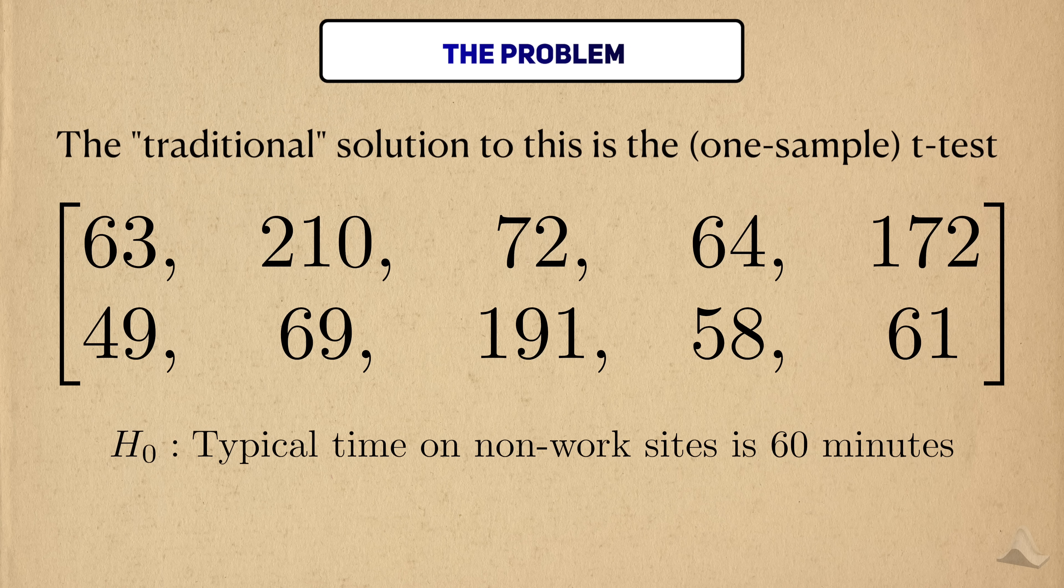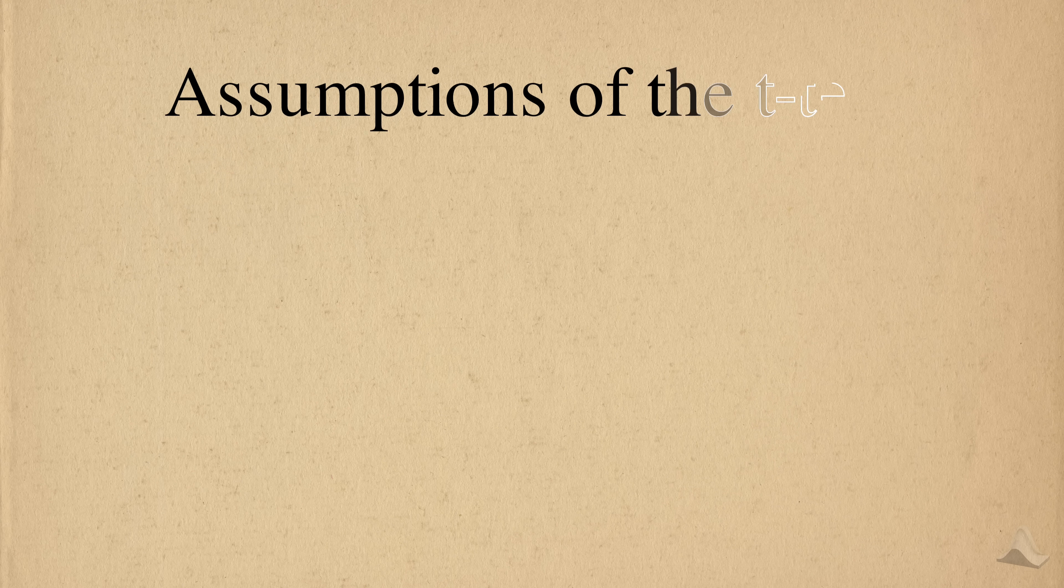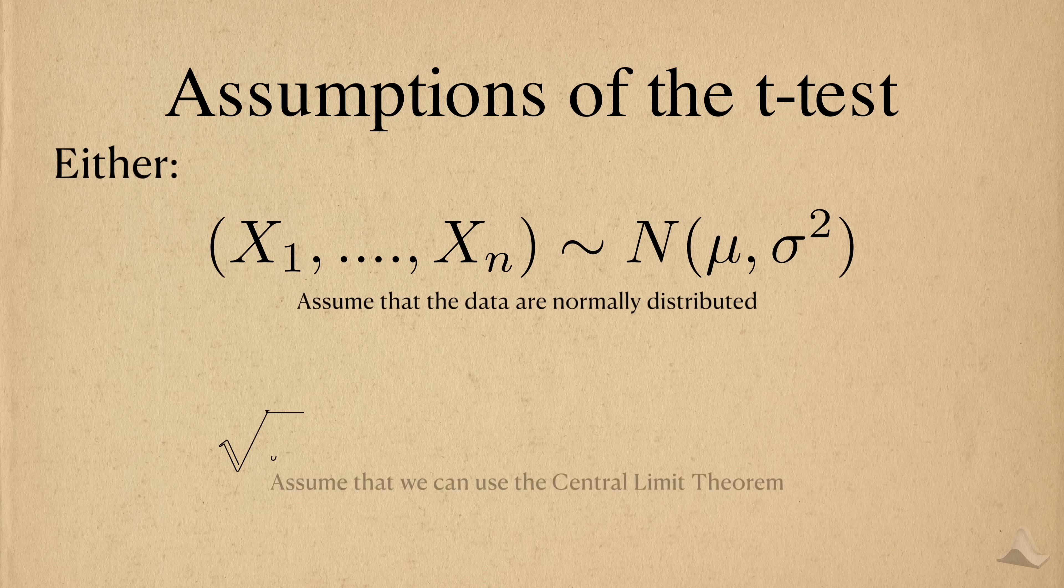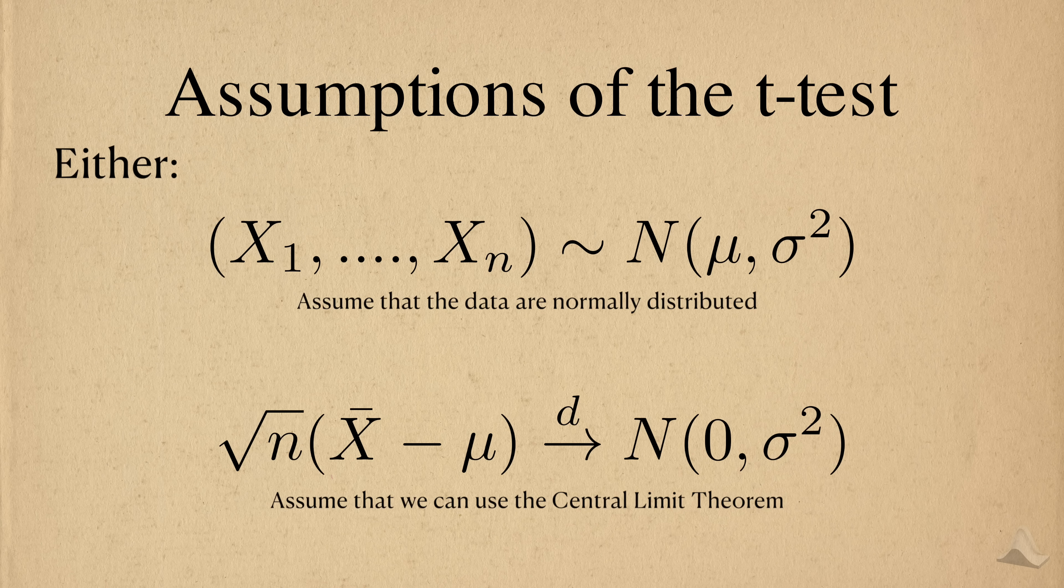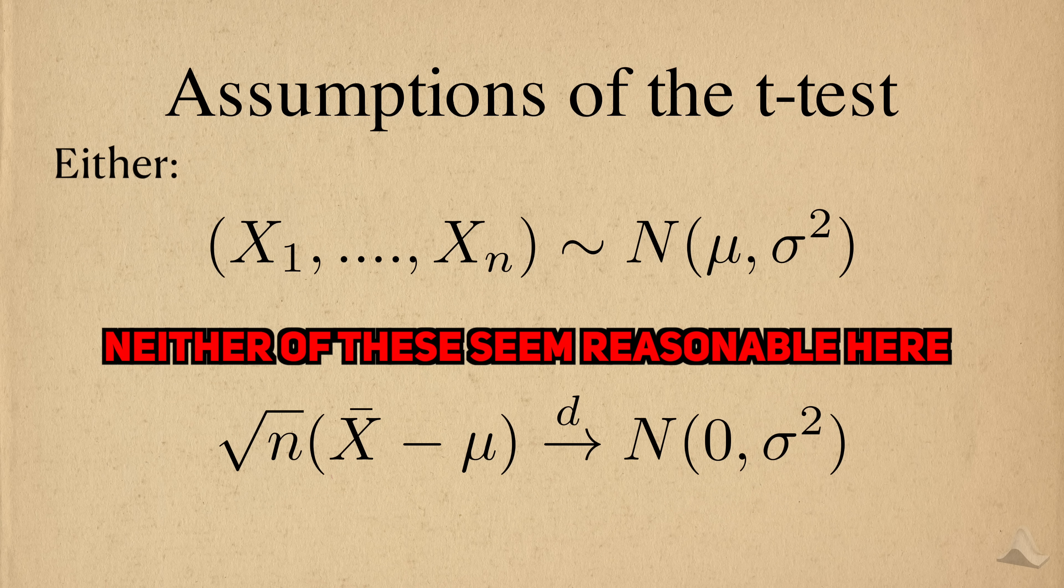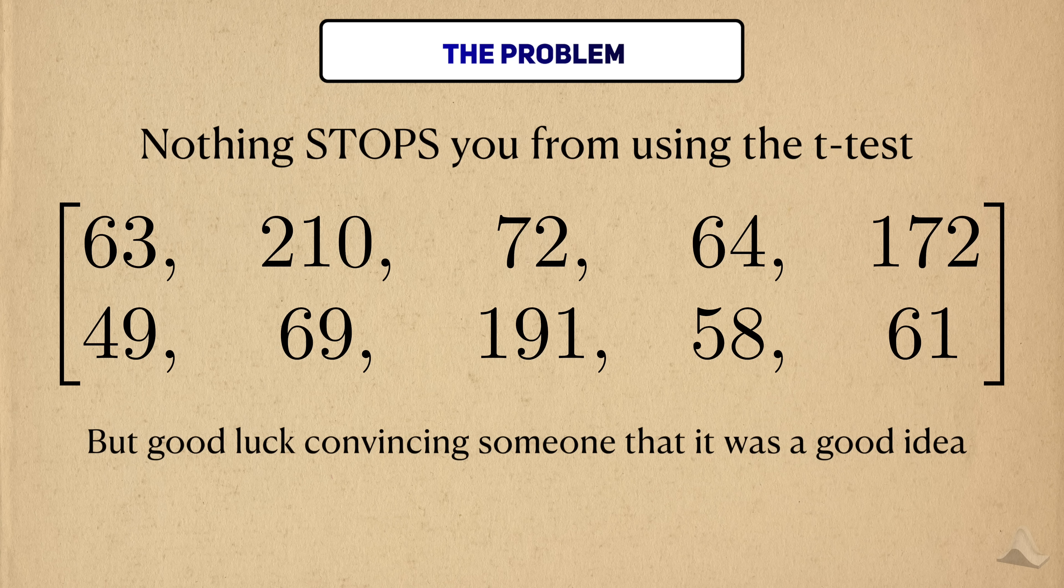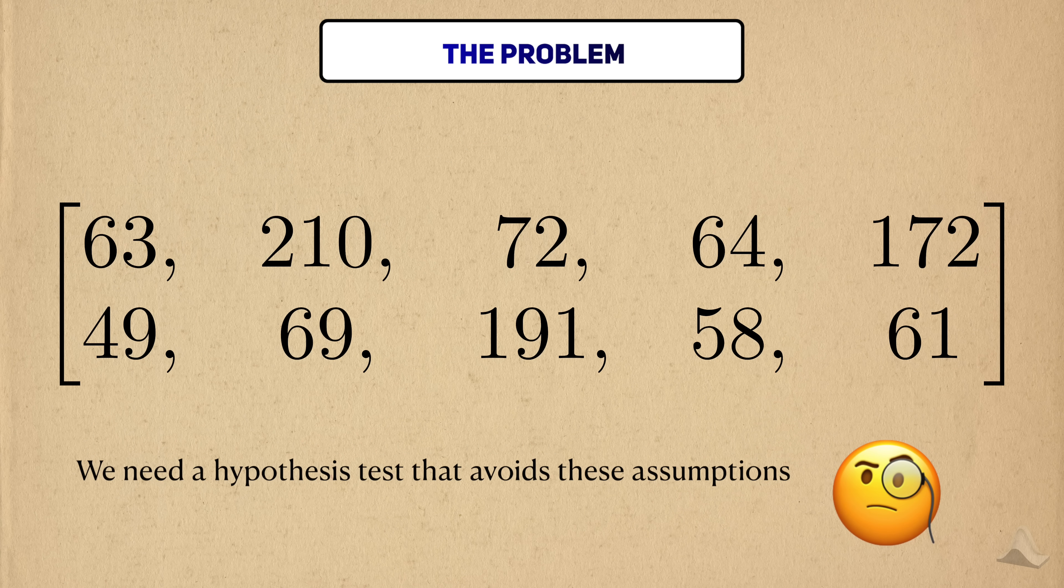But here's the problem. The traditional test we use for a one-sample problem like this is the t-test. Like I mentioned earlier, the t-test requires us to assume that either the data is normally distributed, or that there's enough data for the central limit theorem to kick in. Neither of those assumptions seem reasonable here. I could still perform the t-test, but I would have a hard time convincing other people that this was a good idea. I need a hypothesis test that allows me to avoid the assumptions of the t-test, but still allow me to learn from the data.